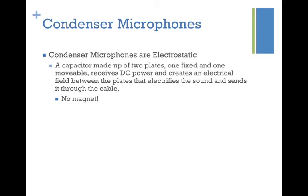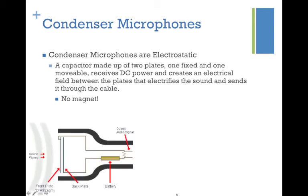The other main type of microphone is the condenser microphone. These are electrostatic — they use a capacitor made up of two plates. You have a front plate which is your diaphragm, which vibrates as sound passes through, and then a back plate. Both plates receive DC power, which creates a very narrow electrical field between them. As sound passes through and the diaphragm vibrates, it electrifies the vibration and it gets captured by both plates and sent out to whatever comes next. The benefit is there's no magnet.